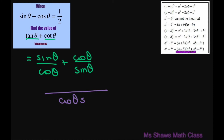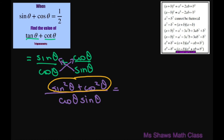Combining over the common denominator, the numerator becomes sine squared of theta plus cosine squared of theta, which equals 1 by the Pythagorean identity. The denominator is cosine of theta times sine of theta.